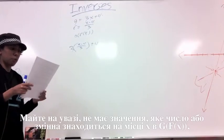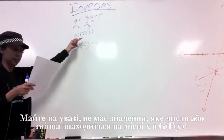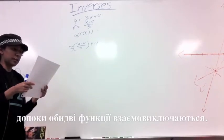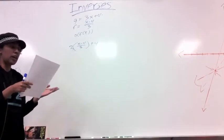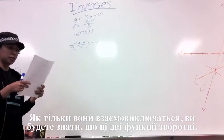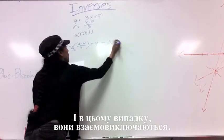Keep in mind that it does not matter what number or variable is in place of the x in g of f of x. As long as the two functions cancel out, leaving behind only the number or variable in place of x, you will know that the two functions are inverse. And in this case, they are.